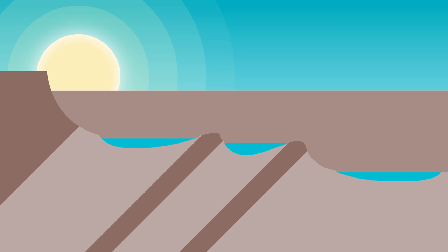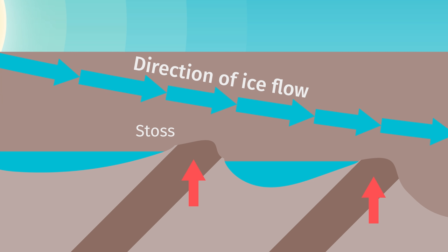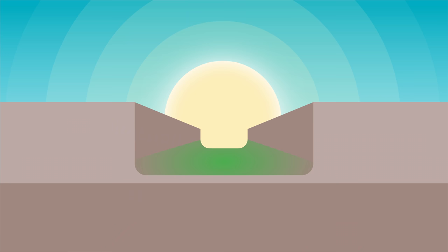Hence the name. Where bands of hard rock are present, valley steps will form on the valley floor. The up-ice, or stoss side of the step, will be smoother and gently sloping, whereas the down-ice, or lee side of the step, will be steep and rugged.